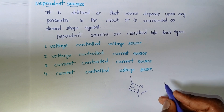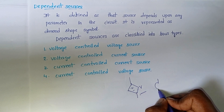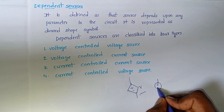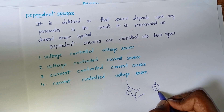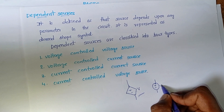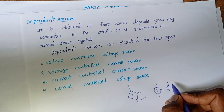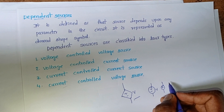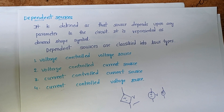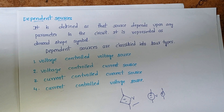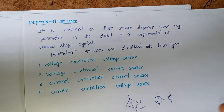In the case of independent voltage sources we represent polarity with a circle, and current direction in case of current sources. In the case of dependent sources we use the diamond shape. There are four types of dependent sources.